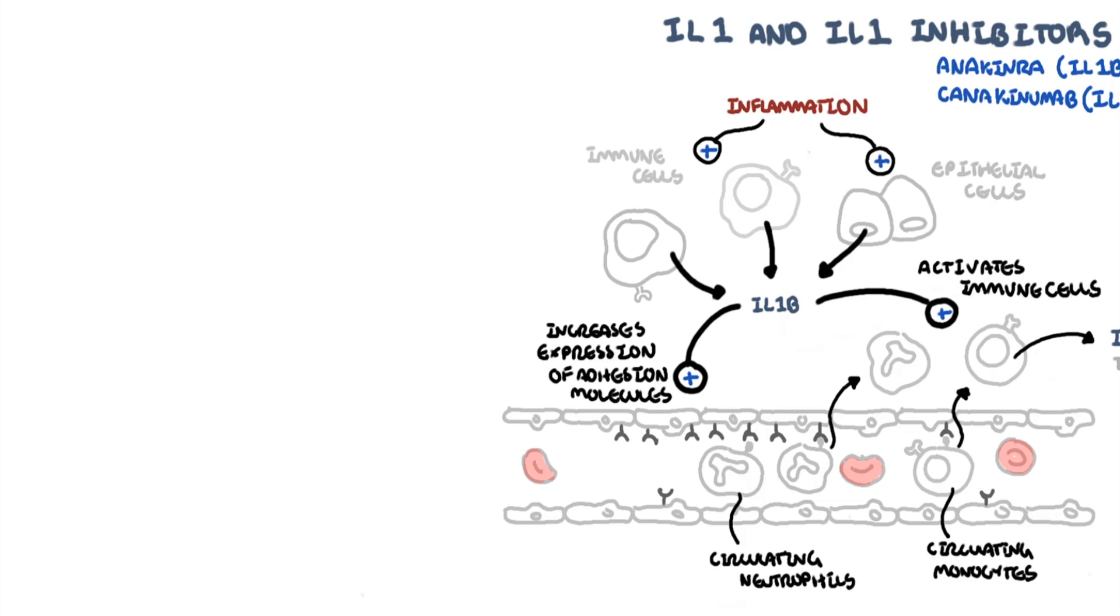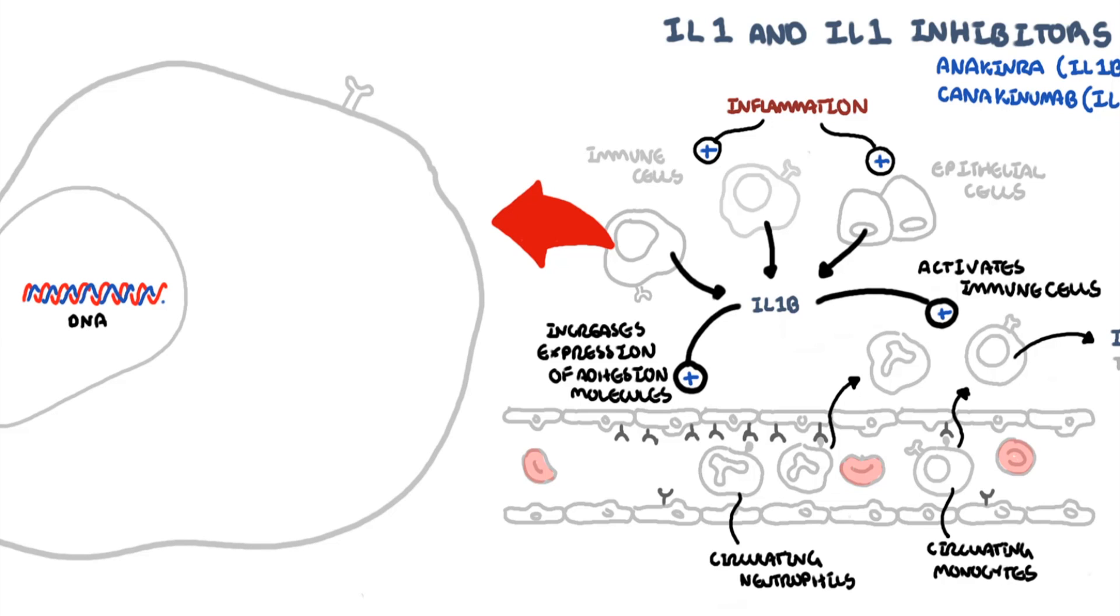Let's take a look now at how interleukin-1b actually gets produced and secreted during an inflammatory response, looking at this immune cell here as an example. Immune cells have many receptors on the cell surface which respond to different inflammatory stimuli, such as cytokines, components of pathogens, or damage-associated molecular patterns from injured cells. These receptors get stimulated, which initiates a cascade of intracellular events, which will ultimately lead to the activation of transcription factors which are important in the inflammatory process, such as NF-kappa B.